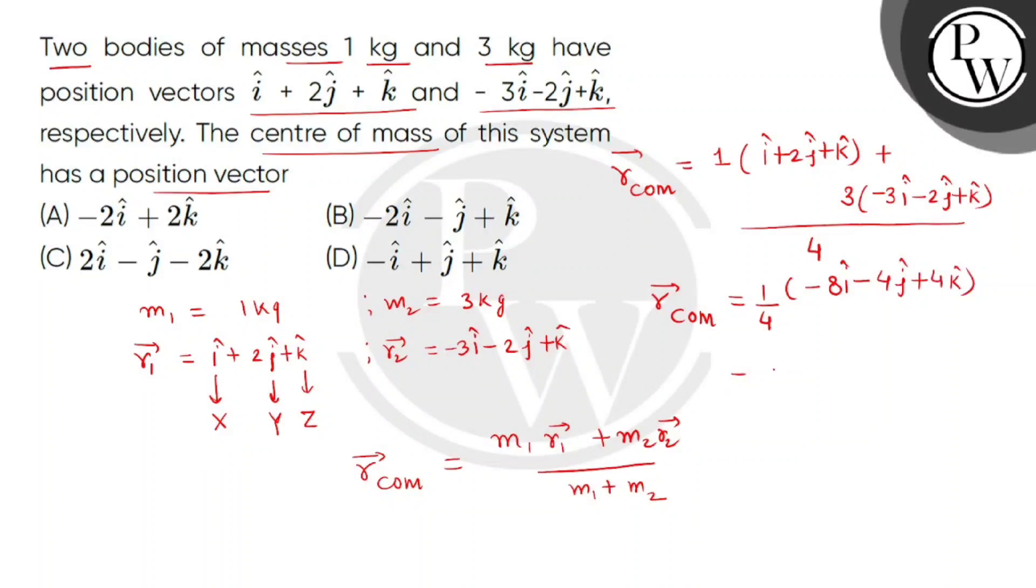After dividing by 4, the answer becomes minus 2i cap minus j cap plus k cap. So the position vector of center of mass will be given by the correct option, which is option number B.